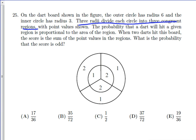So we need to find out the areas of these regions to do this. It says the probability of a dart hitting a given region is proportional to the area of the region, so they told you that. When two darts hit this board, the score is the sum of the point values in the regions. Here's what we need to do. We need to first understand the area of these different regions.